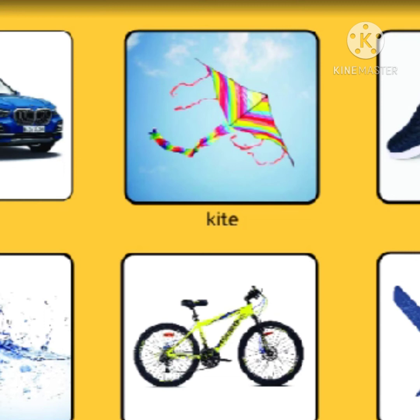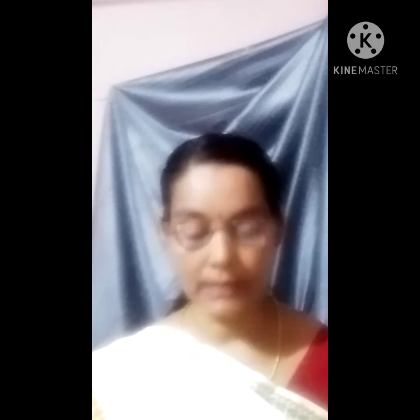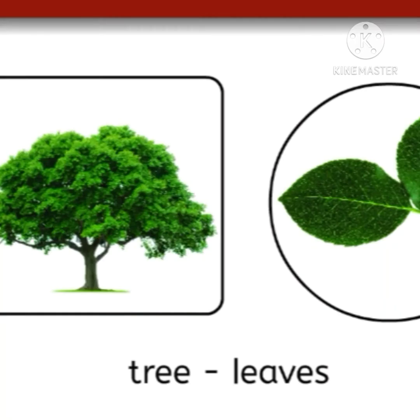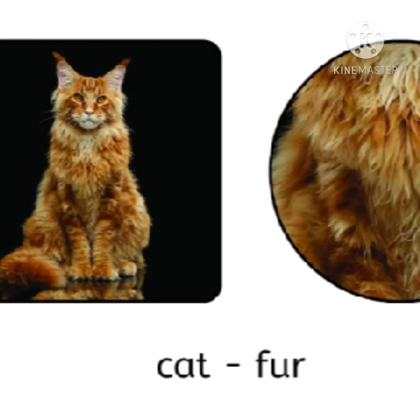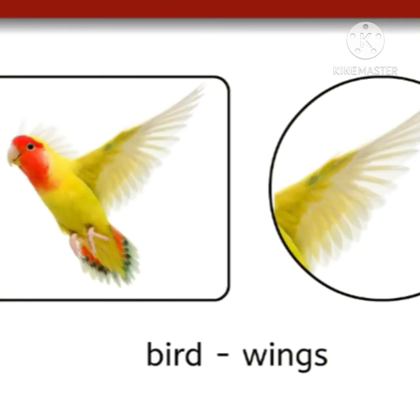Let us look back at the living things. A tree has leaves, a cat has fur. What do birds have? They have wings.